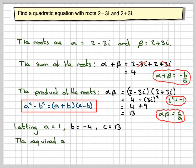Therefore the required equation is of the form a z squared plus b z plus c is equal to 0. So that's going to be z squared minus 4z plus 13 is equal to 0.